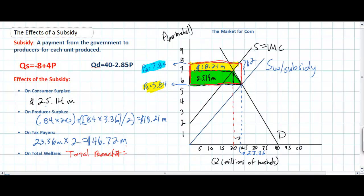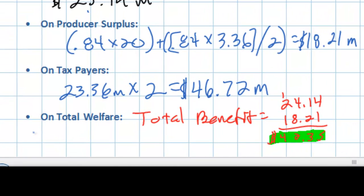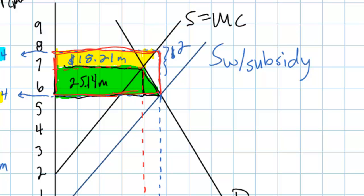The total benefit is the increase in consumer surplus plus the increase in producer surplus: $25.14 million + $18.21 million = $42.35 million. The total cost was $46.72 million. To find the net effect on welfare, we subtract the total cost from the total benefit: $42.35 - $46.72 = negative $4.37 million. On our graph, this loss of total welfare is represented by the purple triangle, which has an area of $4.37 million.